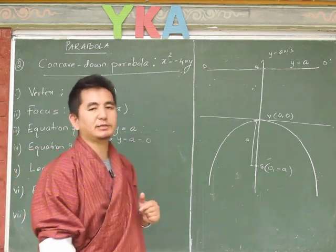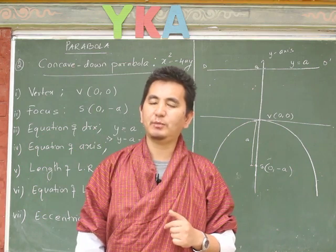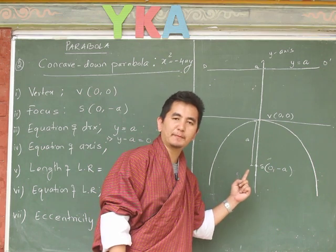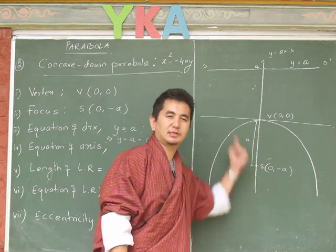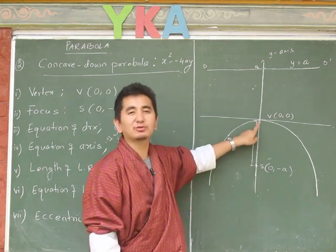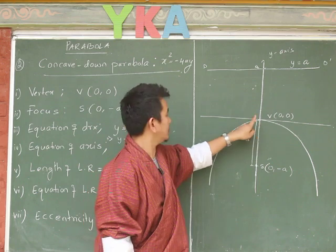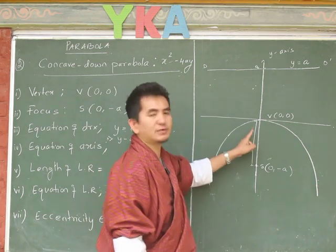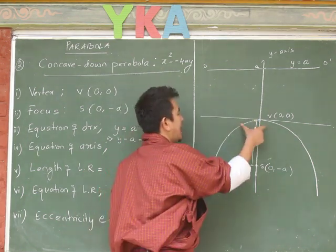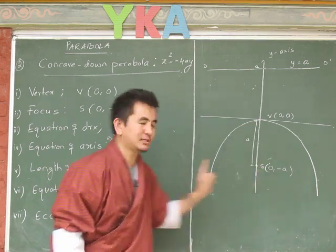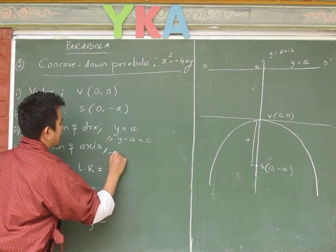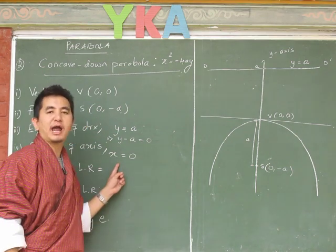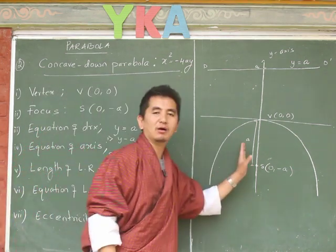Next is the equation of the axis. The axis is the line passing through the vertex of the parabola. Since this parabola lies along the y-axis, the y-axis is the axis of the parabola. Therefore the equation of the axis is x = 0, meaning it does not lie on the x-axis — it lies on the y-axis.